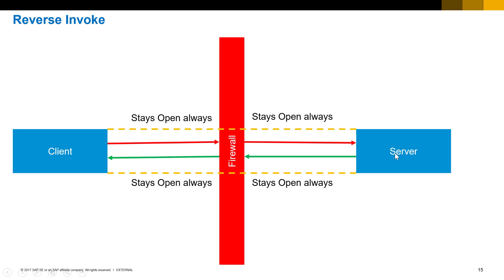Now that this connection is open all the time, the server can make a request on this existing connection to the client. There is no inbound port on the firewall that needs to be open because this connection is already established. The roles are reversed because the server on the right-hand side can now make a request to the client on the left-hand side.